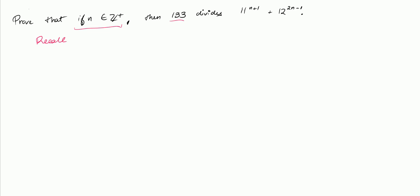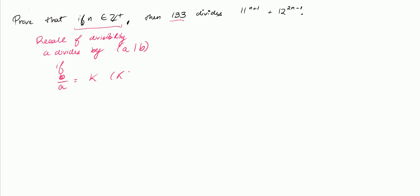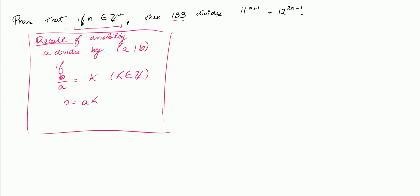A quick recall of divisibility: we say that a divides b, or a bar b, if b over a is equal to an integer k — so k is an integer. We also write this as b equals ak. So my statement P(n) in this case is going to be that 133 divides 11 to the n plus 1 plus 12 to the 2n minus 1.